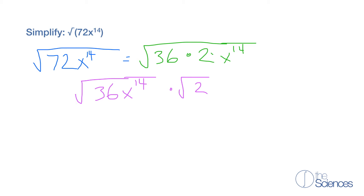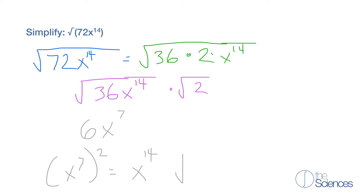The square root of 36 is 6, and the square root of x to the 14th power is x to the 7th power. Because remember, x to the 7th power squared is 7 times 2, which gives x to the 14th. So the square root of x to the 14th is x to the 7th.